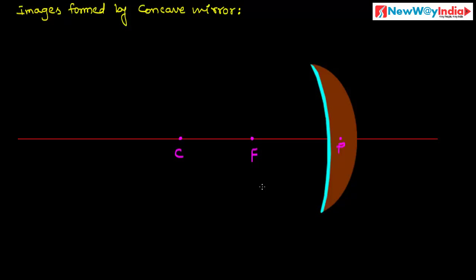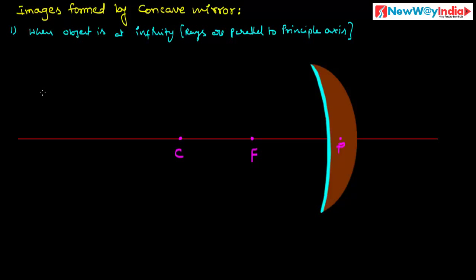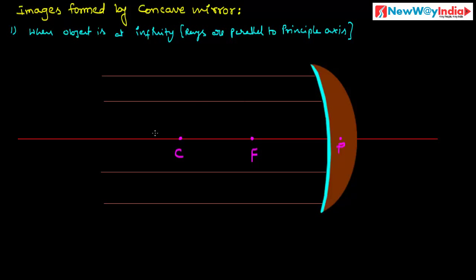In the first case, when the object is placed at infinity, the rays are parallel to the principal axis. These rays are parallel to the principal axis and are the incident rays, incident on the concave mirror surface. After reflection, these rays meet at the principal focus.